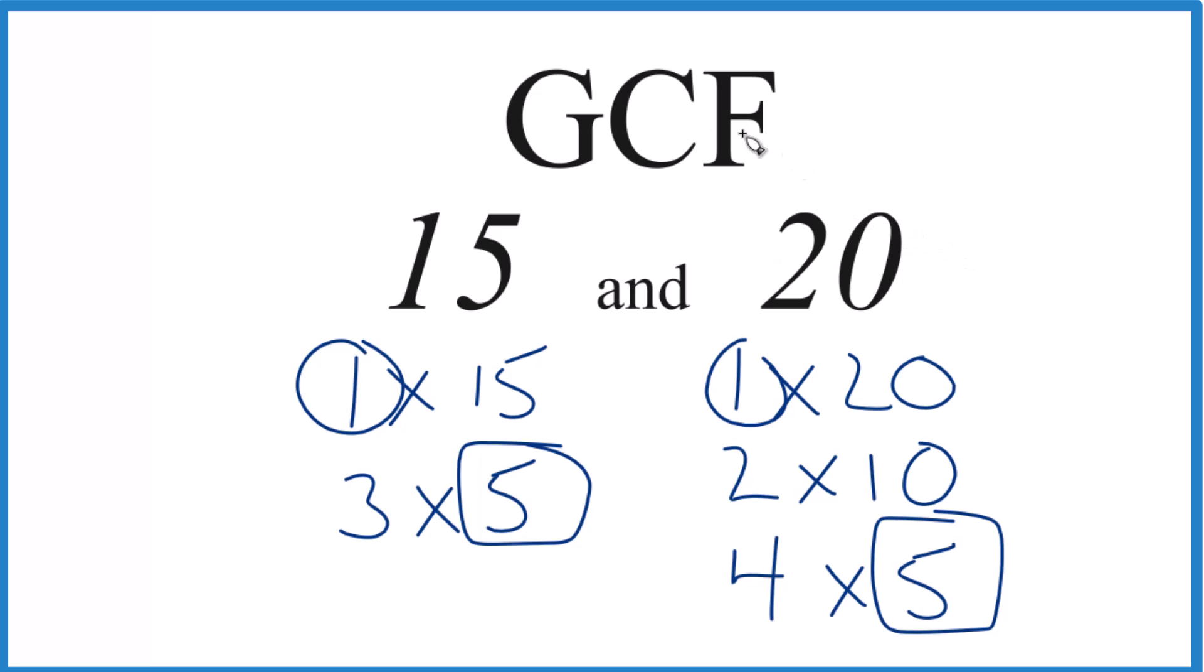So that's it. 5. That's the GCF for 15 and 20. You could use other methods like prime factorization for this, but for small numbers, this is usually easiest. This is Dr. B. Thanks for watching.